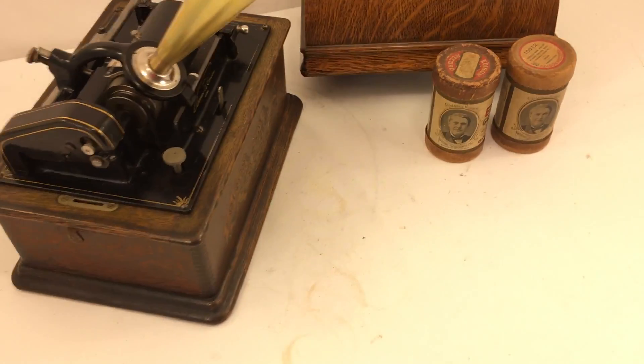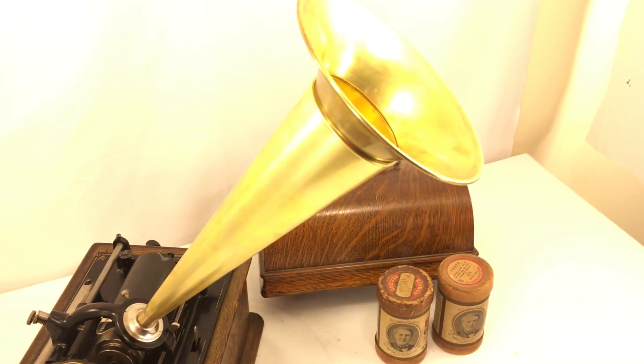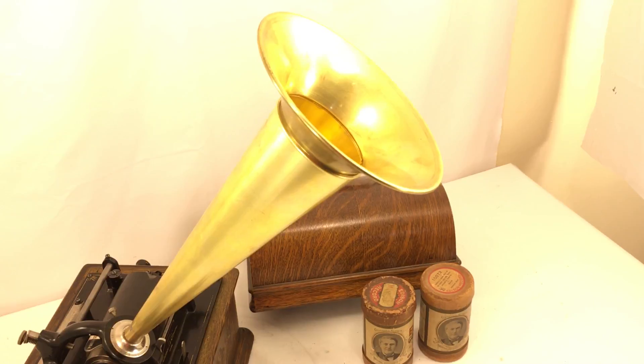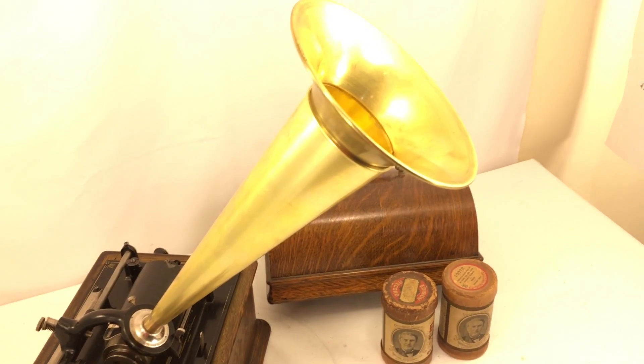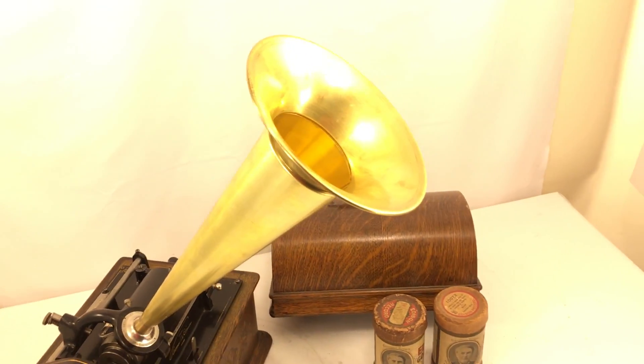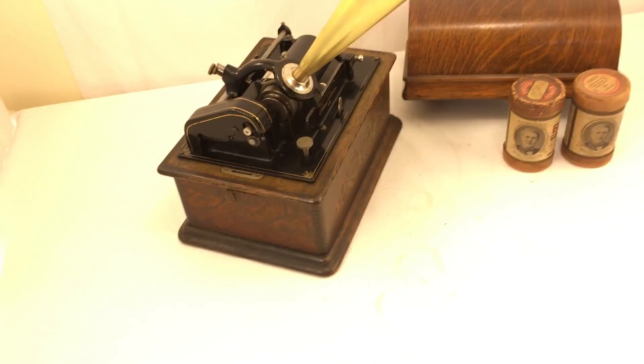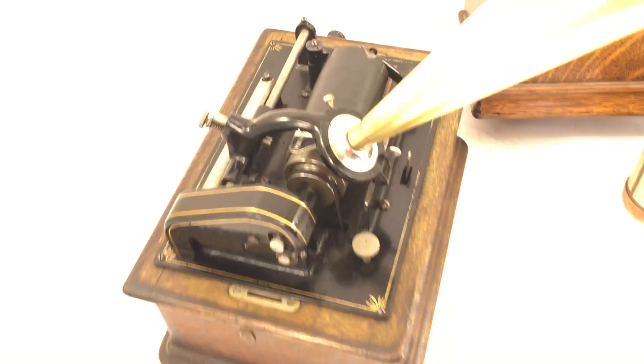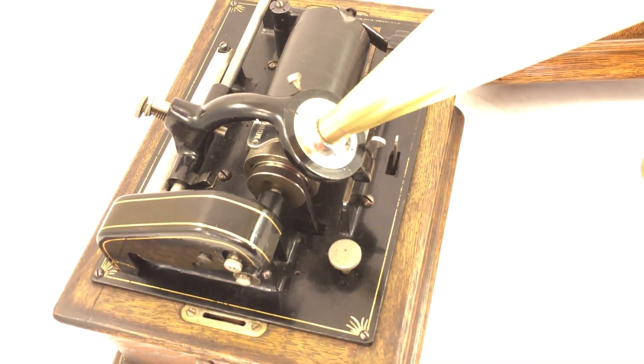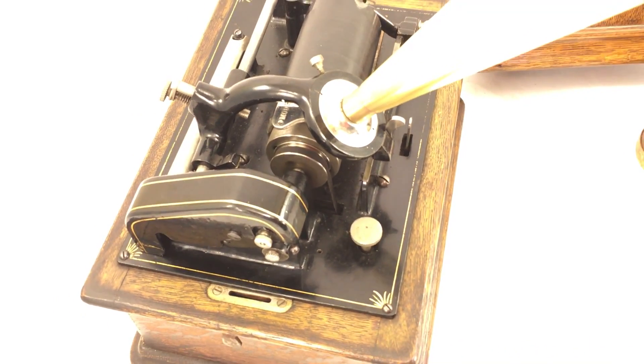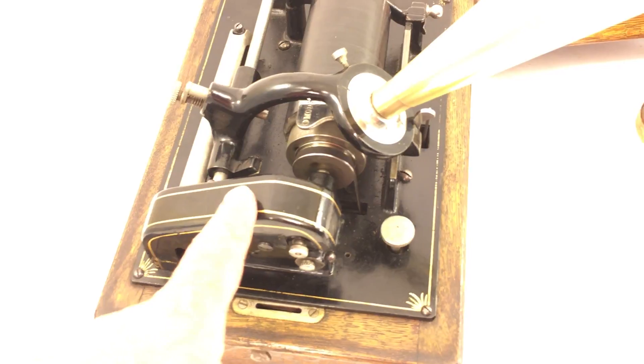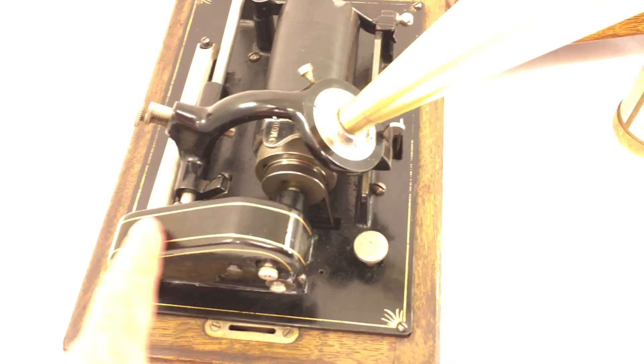The phonograph also comes with a reproduction brass horn. It's about 14 inches long and maybe six and a half inches in diameter. The bath plate was retouched or repainted. The cover for the gears was also repainted.